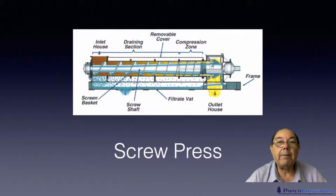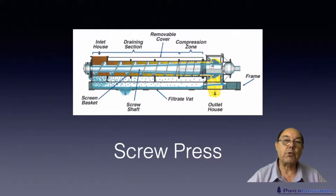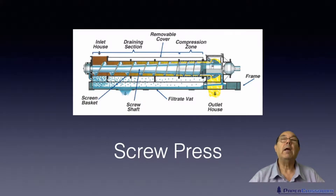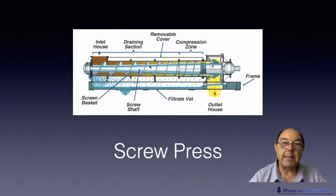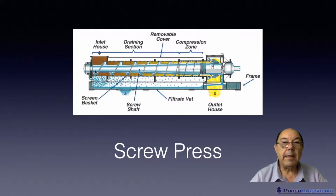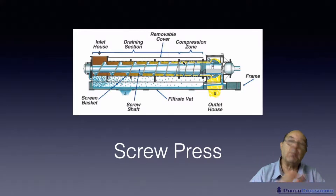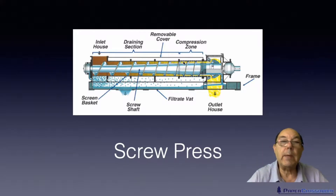And then we have the screw press — the modern method of dewatering. The screw press relies on squeezing the water out of the stock in two ways. First of all you've got a perforated casing, and the shaft gets wider and wider, so the space between the casing and the shaft gets smaller and smaller. That's how the squeezing occurs.